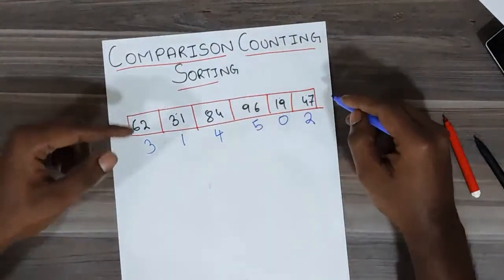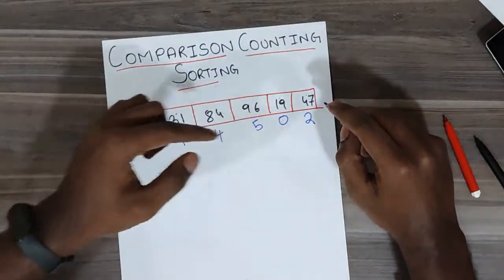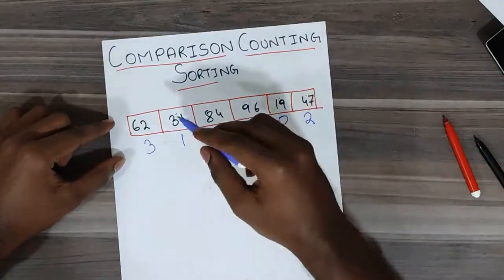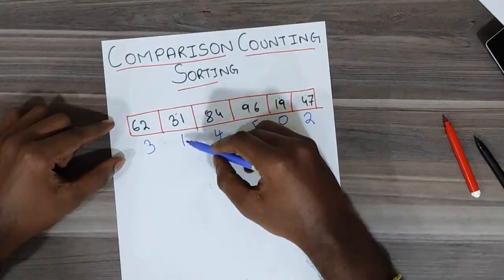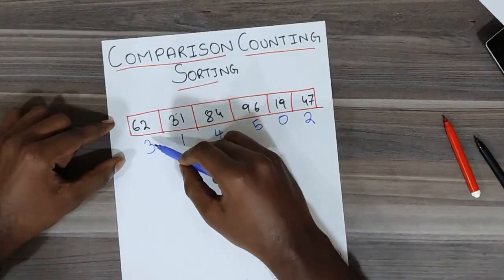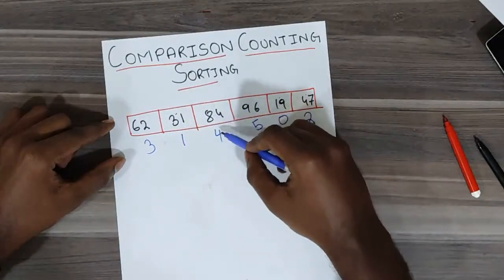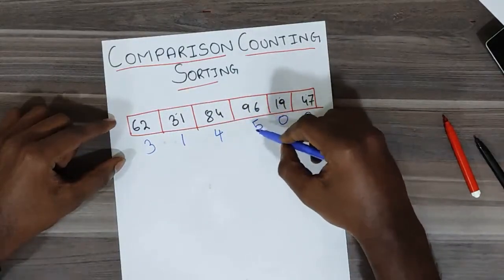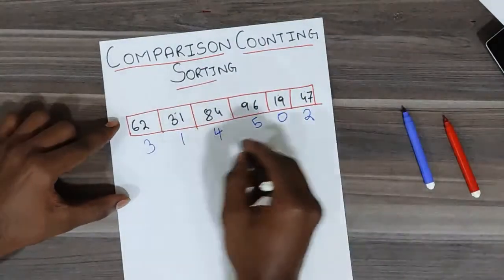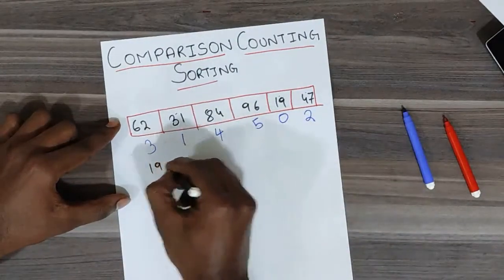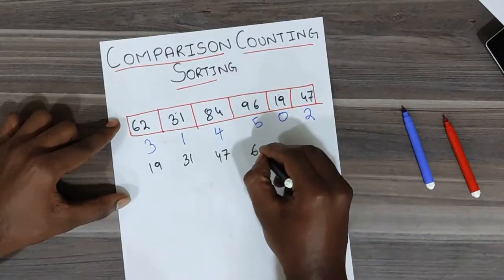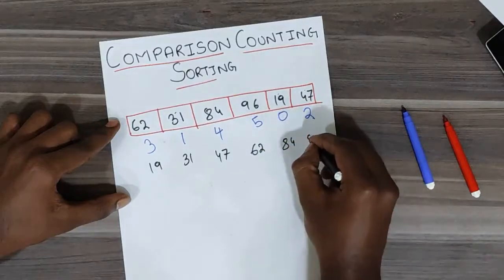For 47, two numbers — 31 and 19 — are smaller, so it would get a count of 2. So these are the corresponding counts. In the sorted array: 19 gets the first position, 31 gets the second, 47 gets the third, 62 gets the fourth, 84 gets the fifth, and 96 gets the sixth position.